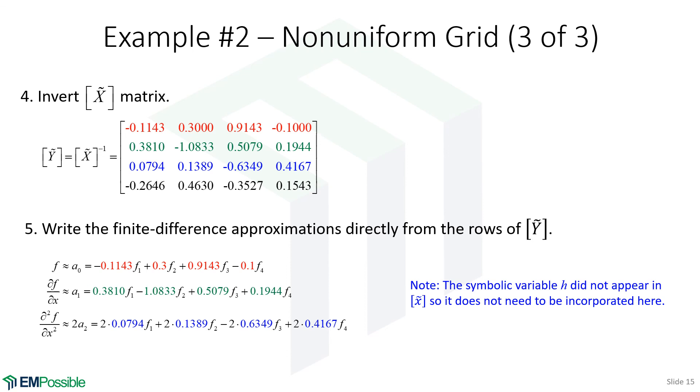For our second order derivative, we're reading off the third row. We're writing those, multiplying the F's, but remember to multiply by 2. For the third order derivative, if we ever needed that, I believe we multiply by 6. I have no idea what's higher than that. I'd have to derive it.